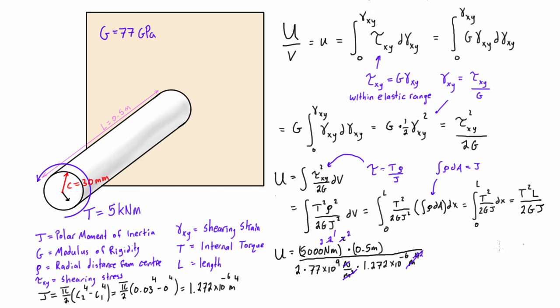So we're going to have N times meters. We can rewrite this maybe a little bit more cleanly, so we can see that this is just 5,000 squared N times 0.5 meters divided by 2 times 77 times 10 to the 9 times 10 to the negative 6 is just 10 to the 3, and then times 1.272.